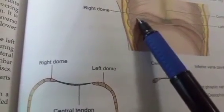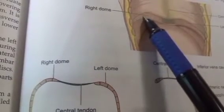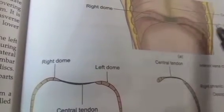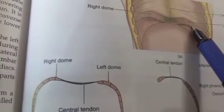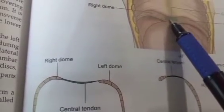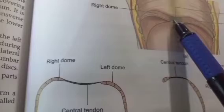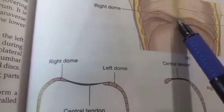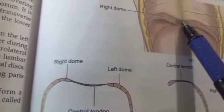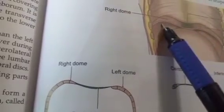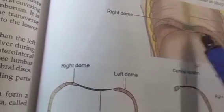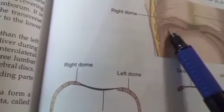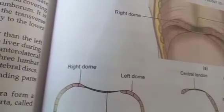In full expiration, the right dome reaches the level of the 4th intercostal space. The left dome reaches the level of the 5th rib. The central tendon lies at the level of the lower end of the sternum, at the level of the 6th costal cartilage. The downward concavity of the dome is occupied by the liver on the right side and by the fundus of the stomach on the left side.